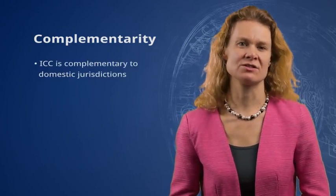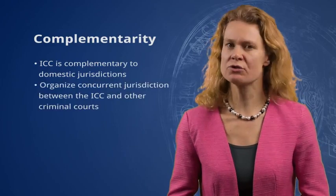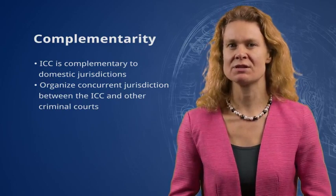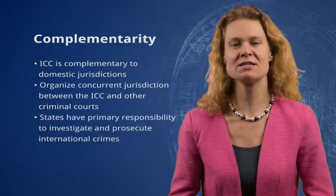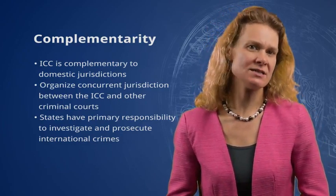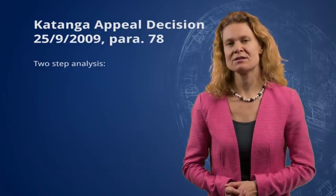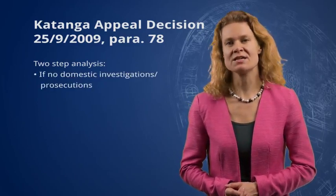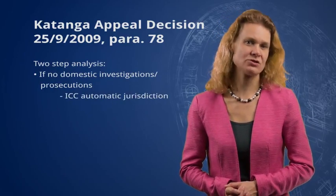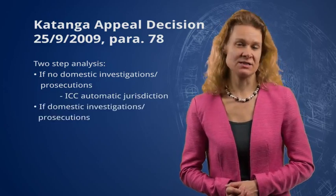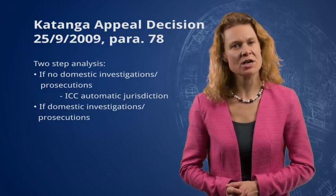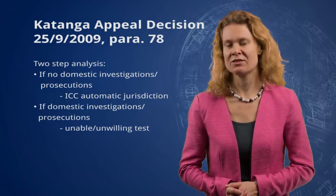A last fundamental feature of the ICC, which reinforces its consensual basis, is the principle of complementarity. The ICC is complementary to domestic jurisdictions. Complementarity is thus a way to organise concurrent jurisdiction between the ICC and domestic criminal courts. States have the primary responsibility to investigate and prosecute international crimes. The idea of complementarity is laid down in Article 17 of the ICC statute, and as the ICC explained in the Katanga appeals decision of 25 September 2009, it involves a two-step analysis. The first step is to determine whether there are or have been investigations or prosecutions. If not, the court has automatic jurisdiction. The second step is made if there are domestic investigations and/or prosecutions, and the court must determine whether domestic authorities are unable or unwilling.